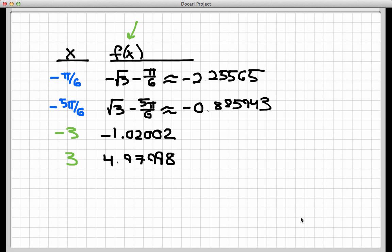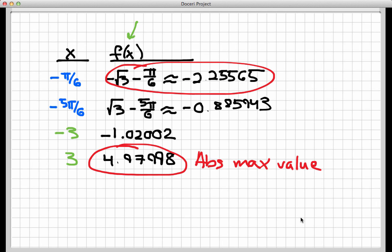The largest of these values that I calculated is going to be the absolute maximum value. That will be this. Okay, so here's your absolute maximum value right there on the interval. It occurs at the extreme right edge of the interval, and it has a value of about 4.97998. Likewise, the smallest of these values is right here. This occurs somewhere within the interval at a critical number, so it's both a local minimum and an absolute minimum. But since it's the lowest of all these values, it's an absolute minimum value. It's exactly equal to -√3 - π/6, about equal to -2.25565.